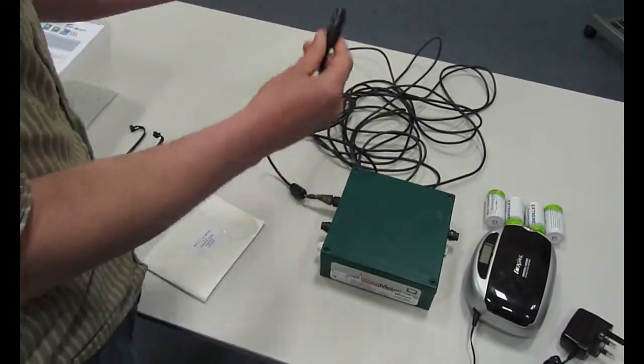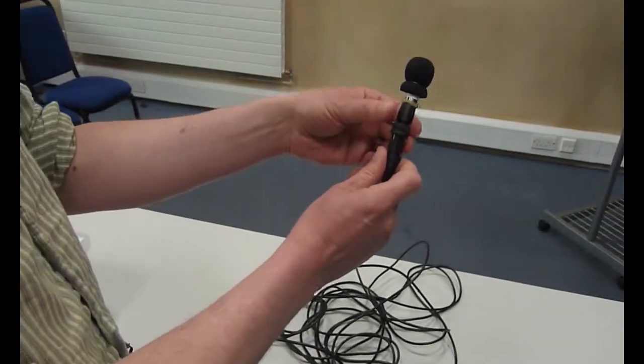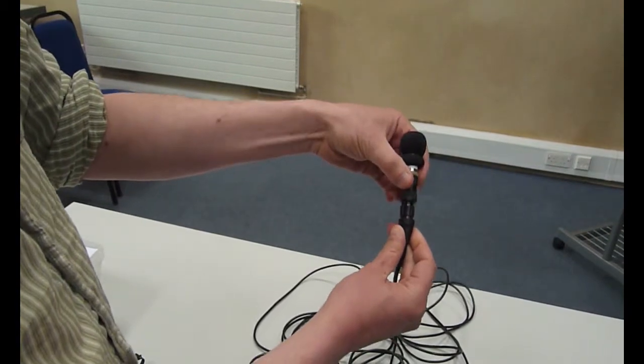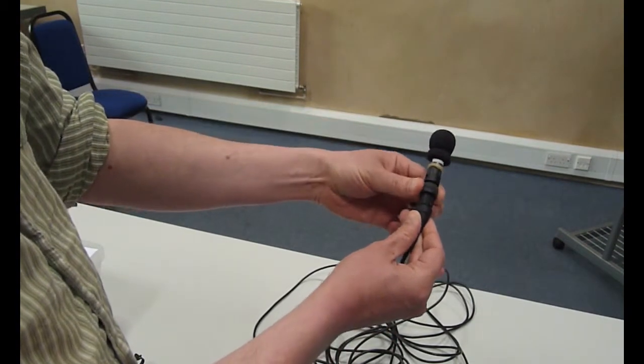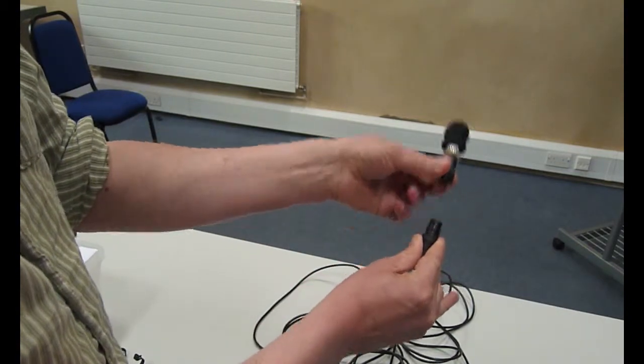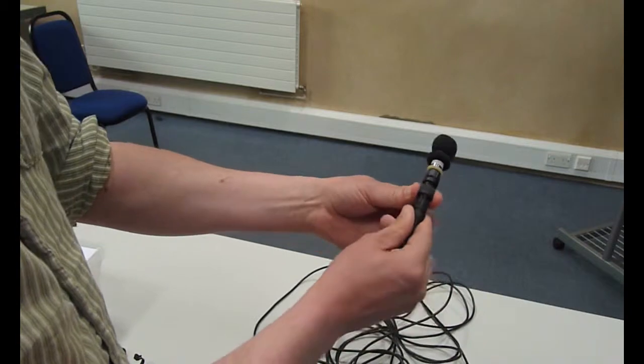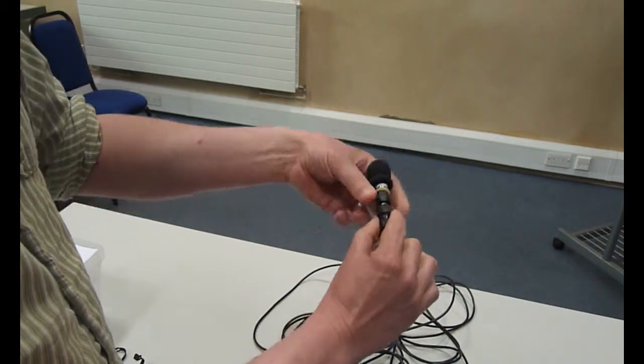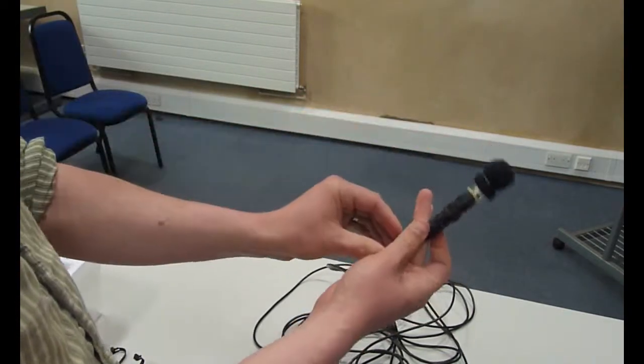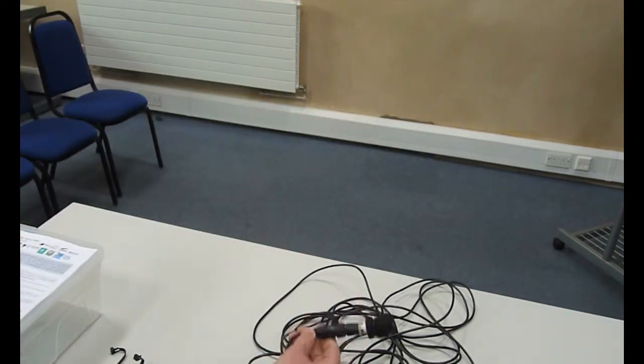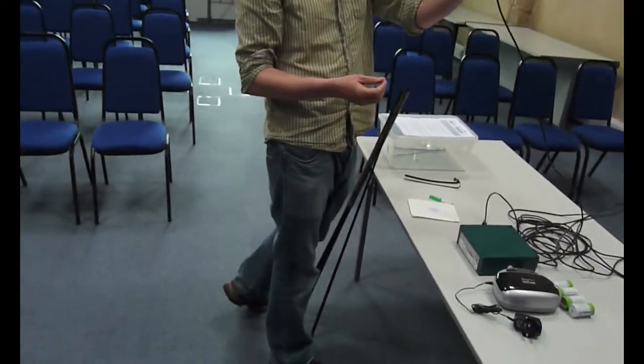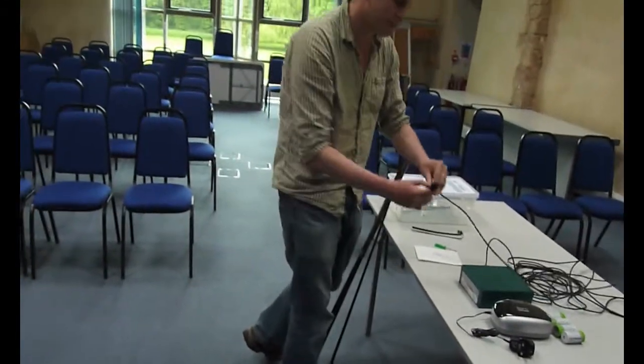The only other thing you need to do when you're putting the detector out in the field is attach the microphone. Again, you turn it until it clicks into place and then you twist that central part. You don't need to force it at all. It should be quite easy to attach, and that's quite secure. What you want to do is to get this microphone right up into the flyway of bats to maximize your chance of getting good recordings.